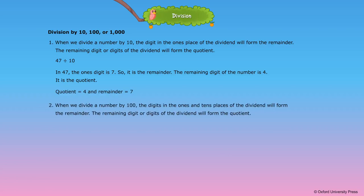2. When we divide a number by 100, the digits in the ones and tens place of the dividend will form the remainder. The remaining digit or digits of the dividend will form the quotient.